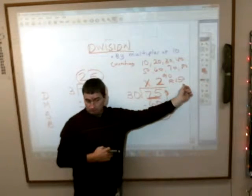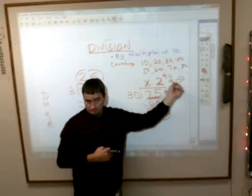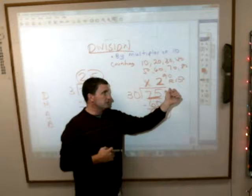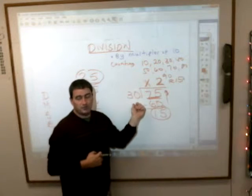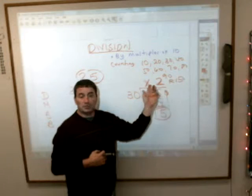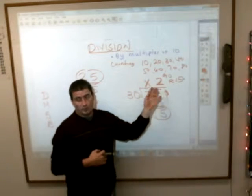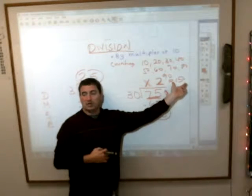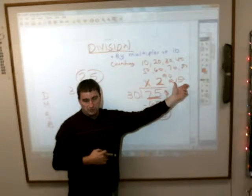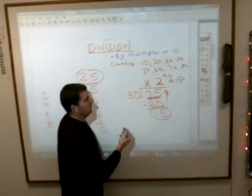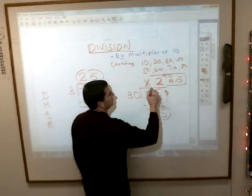As long as your remainder is less than this, it's fine. You could have a 29 there. You couldn't have a 30, because if you get a remainder of 30, it'll go into it another time. So when you get bigger divisors, you can always have bigger remainders too. But it can't be bigger than the divisor. So that's kind of your check there. And then you're done with this problem. It's just 2 remainder 15.